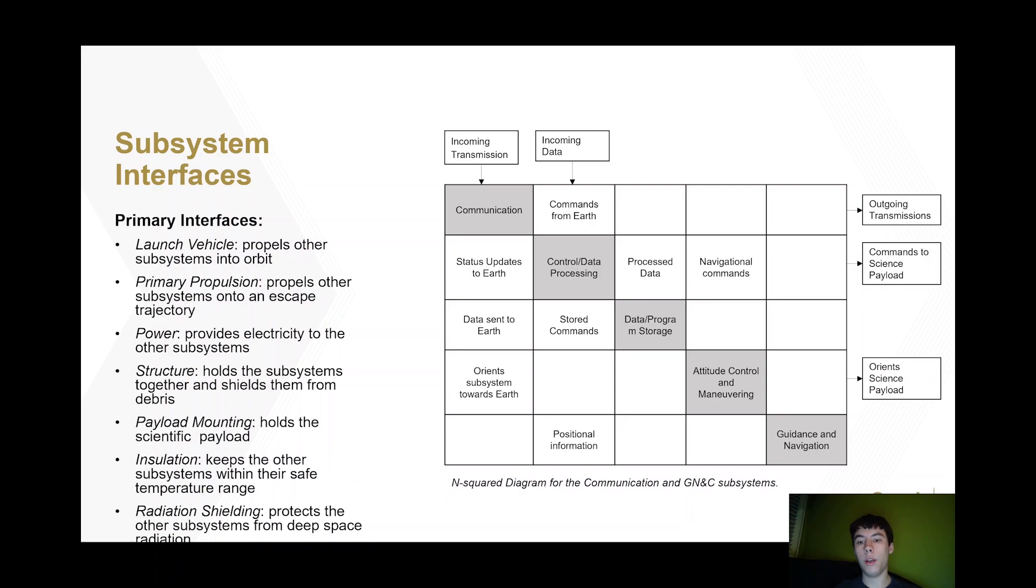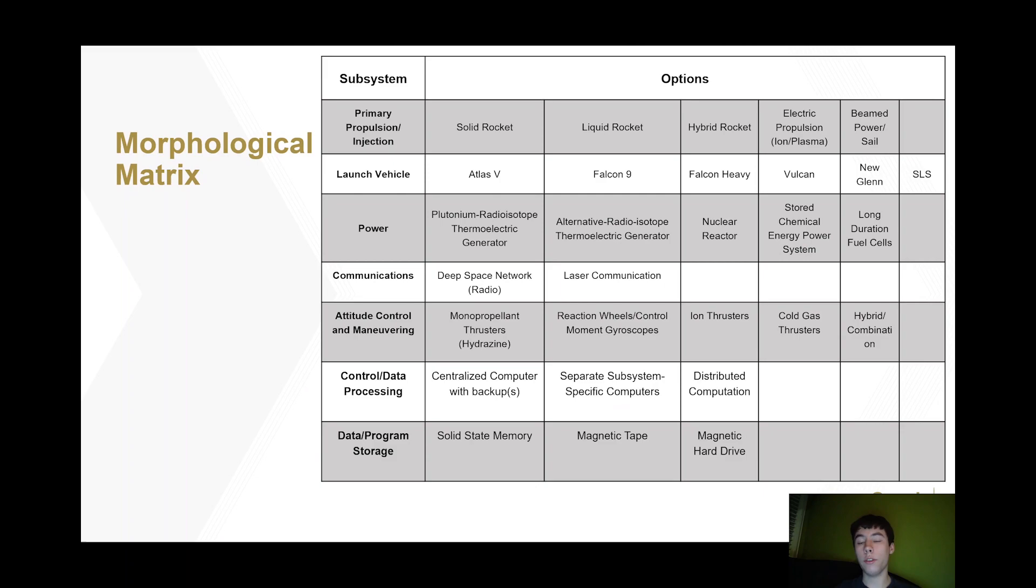On the other hand, we have an N-squared diagram showing some of the more narrow interfaces. For example, the control and data processing subsystem must take data from the scientific instruments and pass it on to the data and program storage subsystem, which at the appropriate time will in turn pass it to the communications subsystem to send back to Earth. So in their design, these subsystems will be focusing more on these individual interfaces rather than on the spacecraft as a whole.